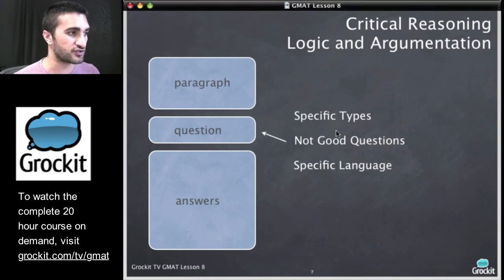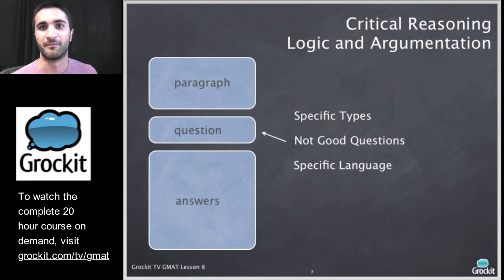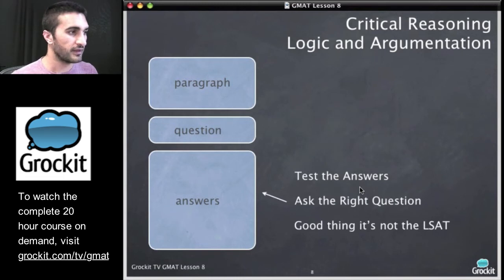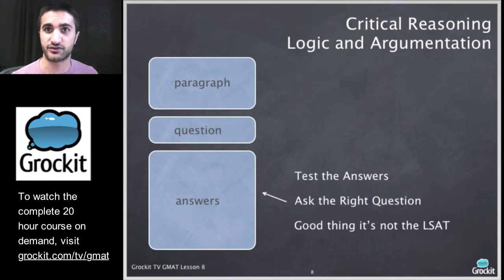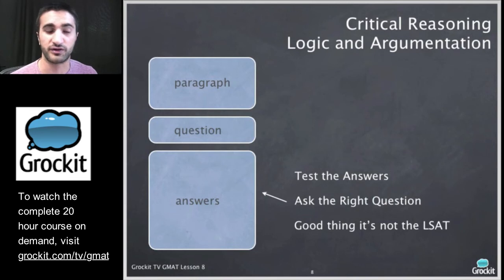Remember that there are specific types of critical reasoning questions — they're not random, they're not new each time the GMAT comes out. We're going to learn to identify them, be GMAT robots about them, and note that the specific language in the question leads us to the question type. The answer choices — we're going to test them out, and we have tests to apply to each answer to help us assess them. For assumption questions, for example, we would negate the answer choice and expect the argument to fall apart.